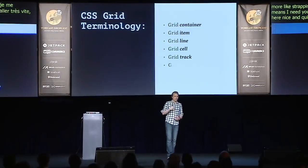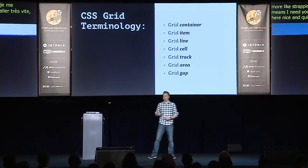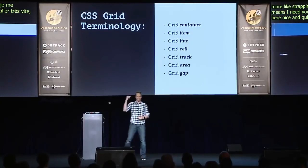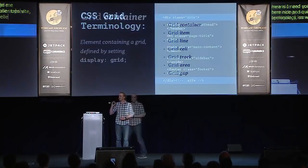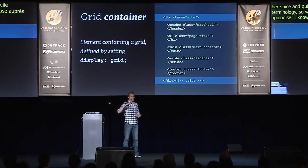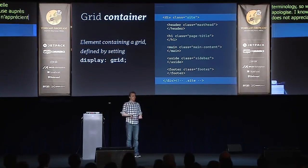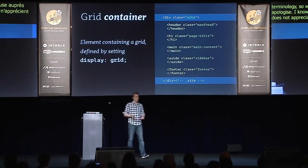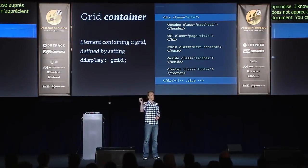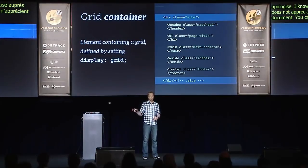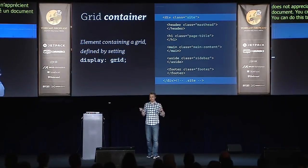CSS Grid needs new terminology. So we have: grid container, grid item, grid line, grid cell, grid track, grid area, and grid gap. A grid container is any container in your document that you create a grid inside. You do that by simply declaring display: grid. You can do this to as many elements as you want on the page.